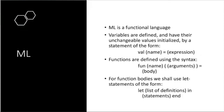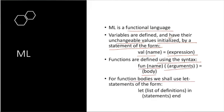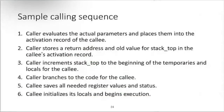ML is a functional language — not machine learning. Variables are defined and have unchangeable values initialized by a statement of the form 'val name expression'. Functions are defined using syntax like 'function name arguments body'. For function bodies we use let statements. Since we are not going to practice it, there is no need to go into detail.